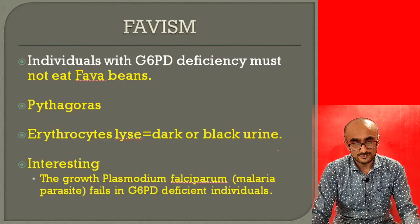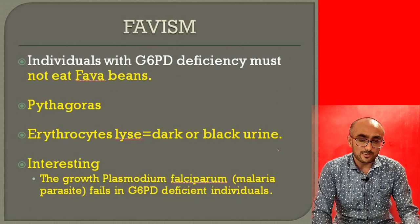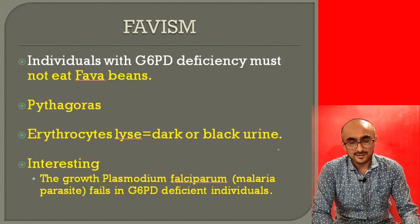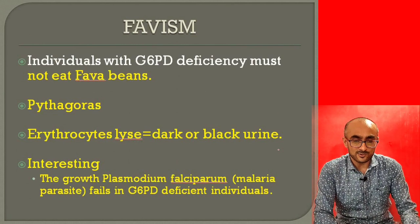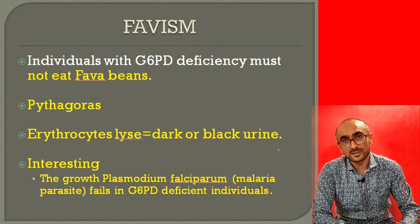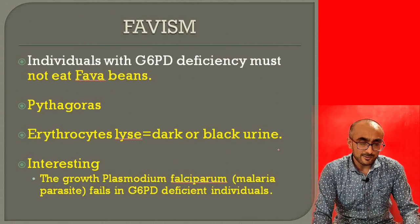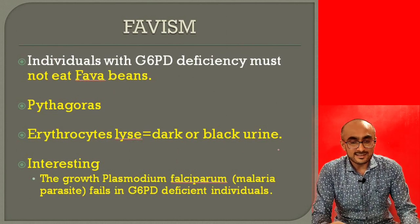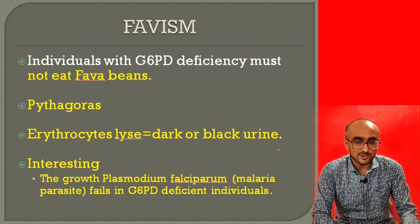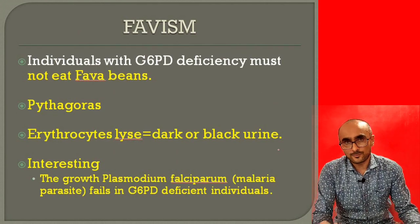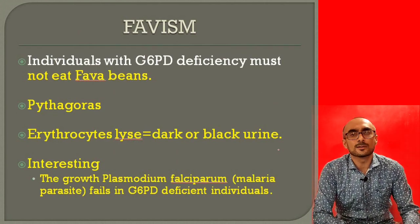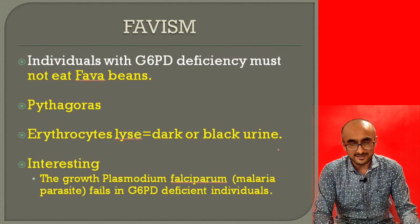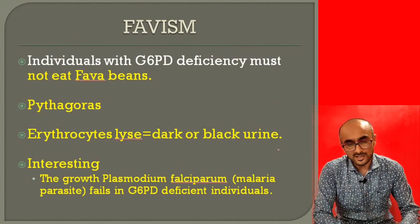This condition is also called favism, because it was initially observed that people who ate fava beans and also had a deficiency of glucose-6-phosphate dehydrogenase developed hemolytic anemia. Even Pythagoras was known to have this condition — he had a G6PD-deficient genetic makeup, which is why he could not consume fava beans or any compound generating reactive oxygen species. In those cases, erythrocytes would lyse, creating the condition known as favism or hemolytic anemia.